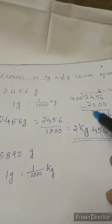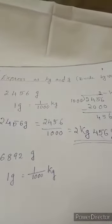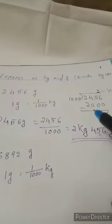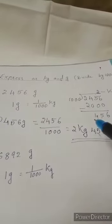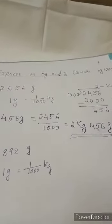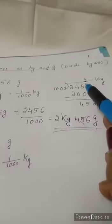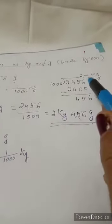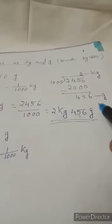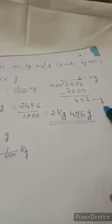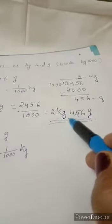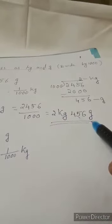2 into 1000, 2000. You will write below here and subtract it. 6 minus 0, 6. 5 minus 0, 5. 4 minus 0, 4. So here, at the right side of this 2, you write kg and reminder 456, there you write g. So your answer is 2 kg 456 grams. Underline it.